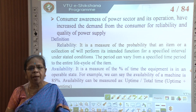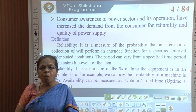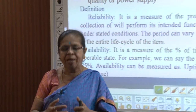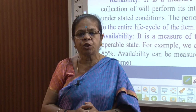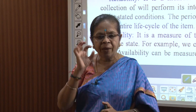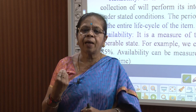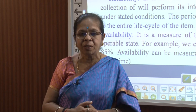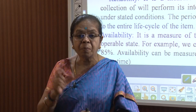Reliability is formally defined as a measure of the probability that an item or a collection of items will perform its intended function for a specified interval under stated conditions — every word is important here. First, it is a probability: if my reliability probability is 0.98, that means 98 percent reliability and there is a 2 percent chance of failure.